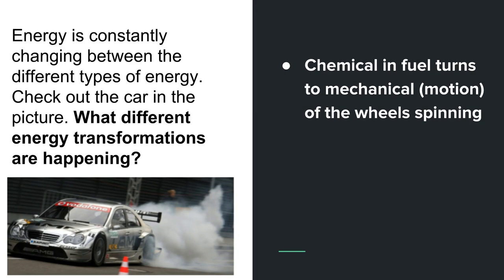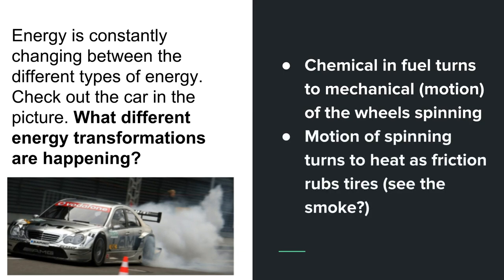So as you can see in the picture the wheels are spinning really really fast. That motion of the spinning is turning to heat as the friction rubs the tires. You see the smoke behind the car? That's the proof of the heat of the friction of the rubber against the road. So we have constantly changes with all the different forms of energy.